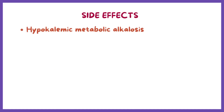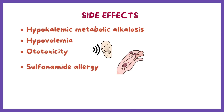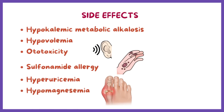Loop diuretics usually induce hypokalemic metabolic alkalosis. Because they are so efficacious, loop diuretics can cause hypovolemia and cardiovascular complications. Ototoxicity is an important toxic effect of the loop agents; ethacrynic acid is the most likely to cause deafness. The sulfonamides in this group may rarely cause typical sulfonamide allergy. Loop diuretics can also cause hyperuricemia and hypomagnesemia.